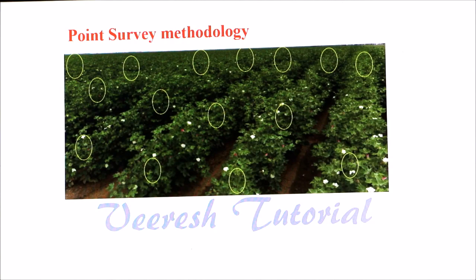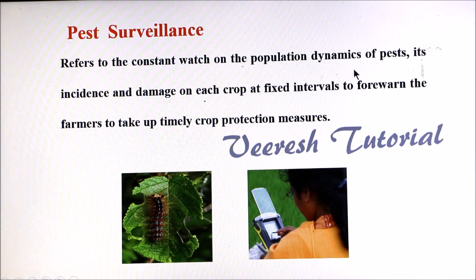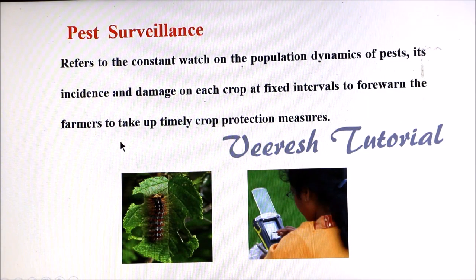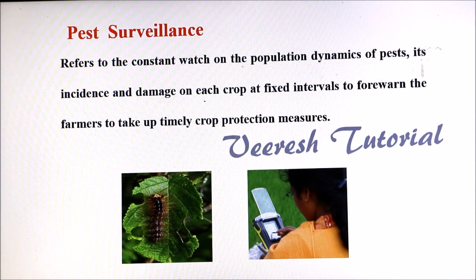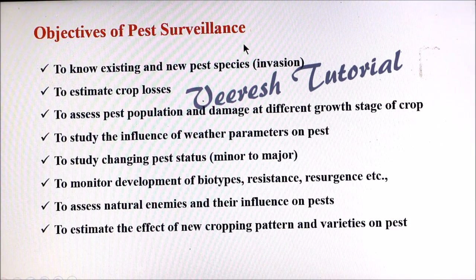If you do this type of survey repeatedly at fixed intervals over a period of time, then that will be called as surveillance. Pest surveillance refers to the constant monitoring of pest population dynamics, its incidence and damage on each crop at regular intervals, to forewarn farmers to take up control measures. In simple words, regular surveys of the same place or locality at consistent intervals to assess changes in pest species over a period of time is called pest surveillance.